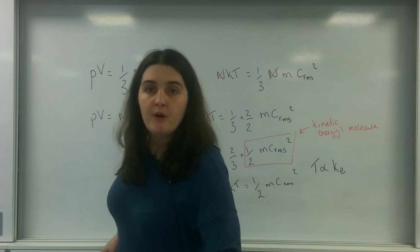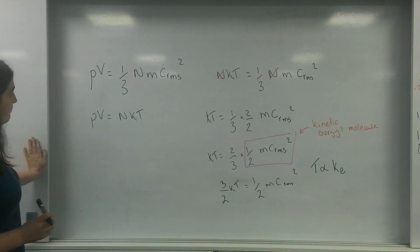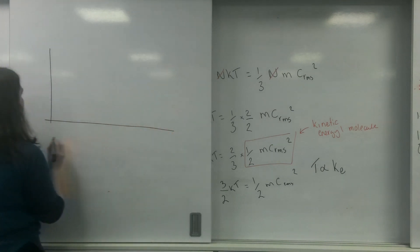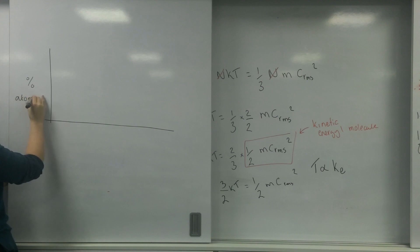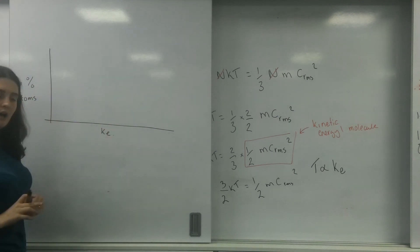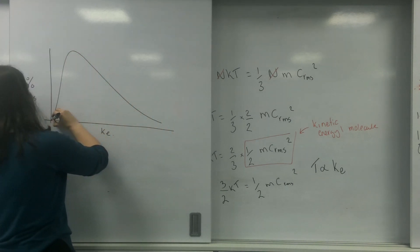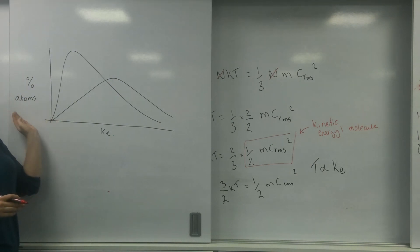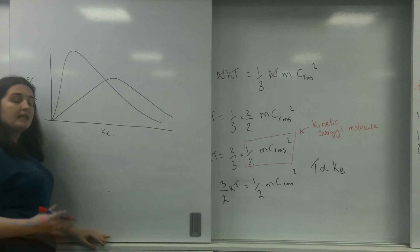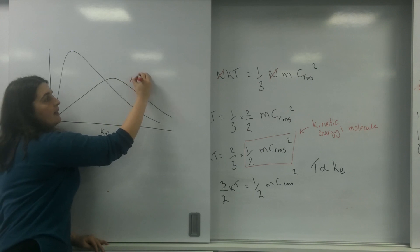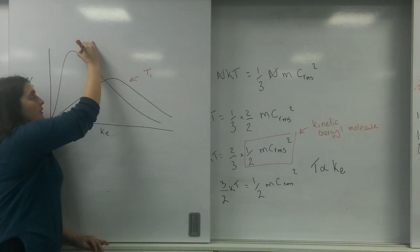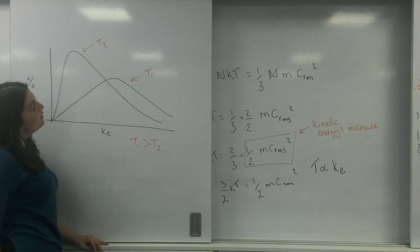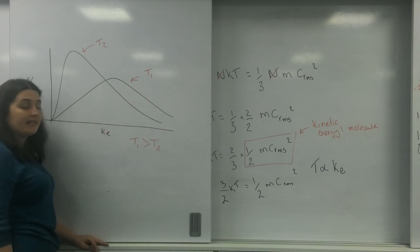Now this relationship between temperature and kinetic energy is really important. If I draw a graph with percentage of atoms on one axis and kinetic energy on the other, I get a lovely distribution. We call the two curves temperature 1 and temperature 2. I know that temperature 1 must be greater than temperature 2 because there are more atoms at a higher kinetic energy.